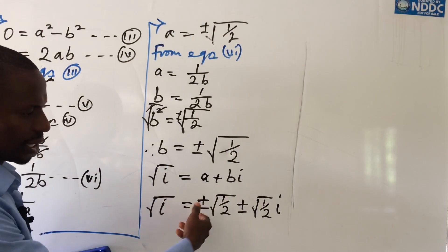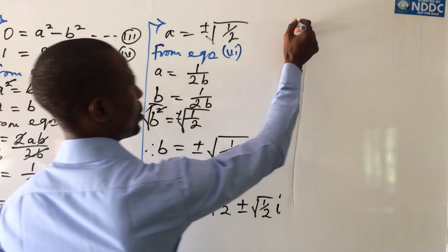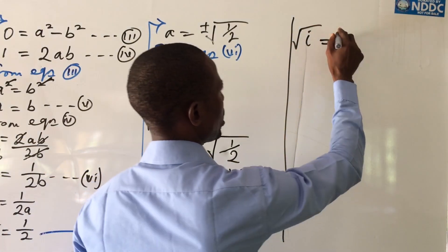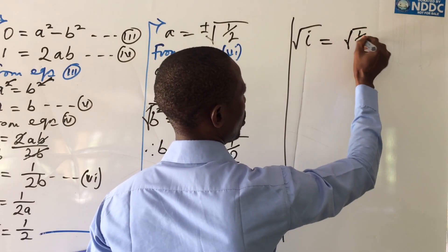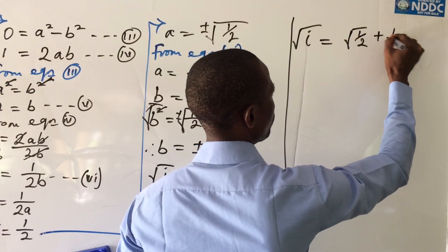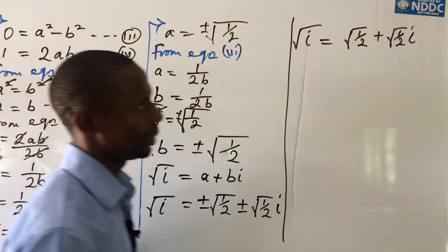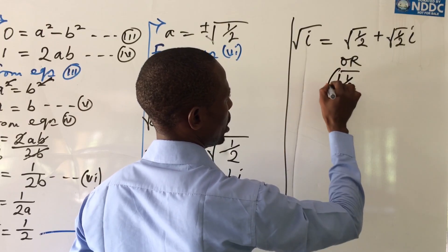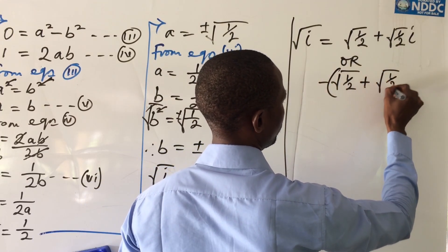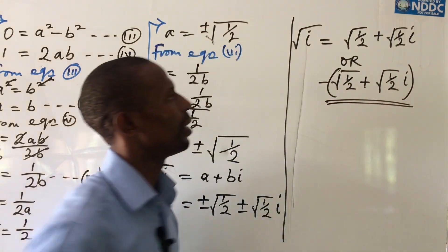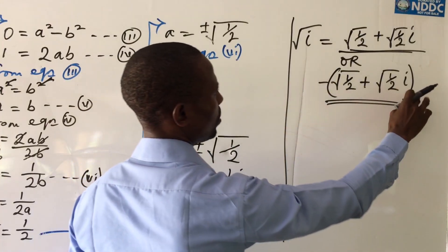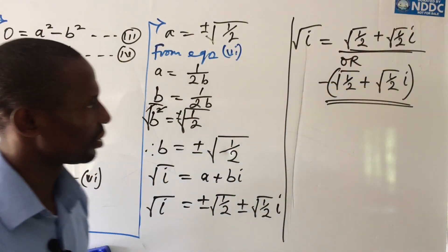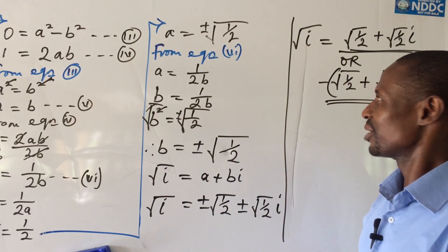Taking the plus-minus into consideration, we can write two solutions. The square root of iota equals √(1/2) + √(1/2)·i for the positive case, and −√(1/2) − √(1/2)·i for the negative case. This marks the end of the proof for the square root of iota.